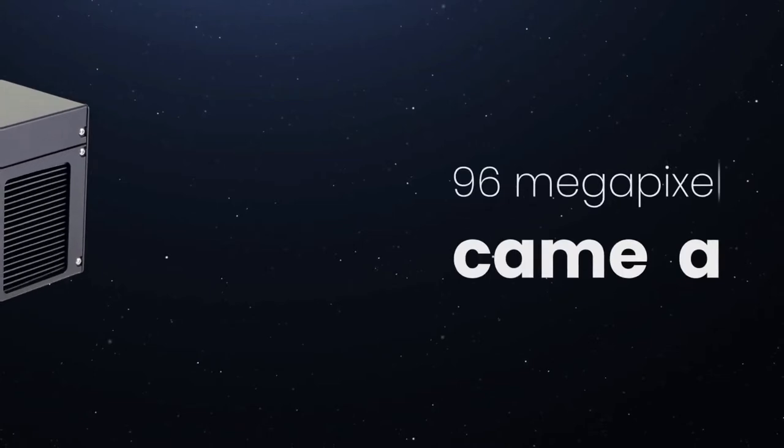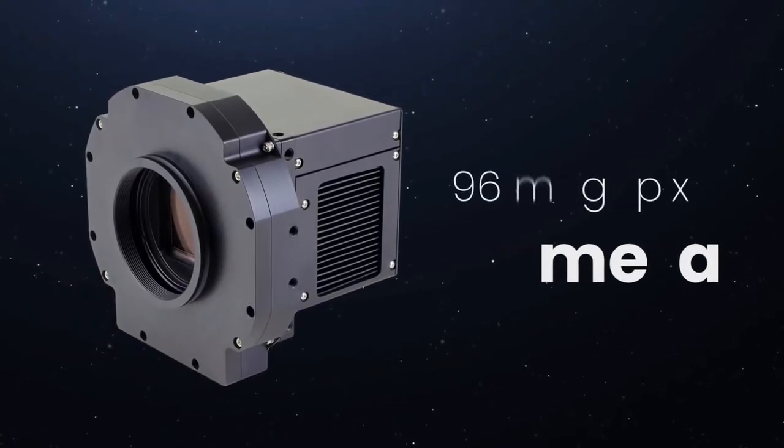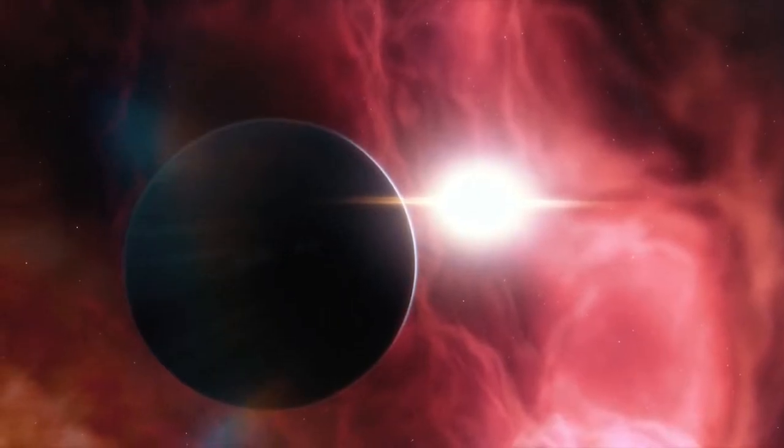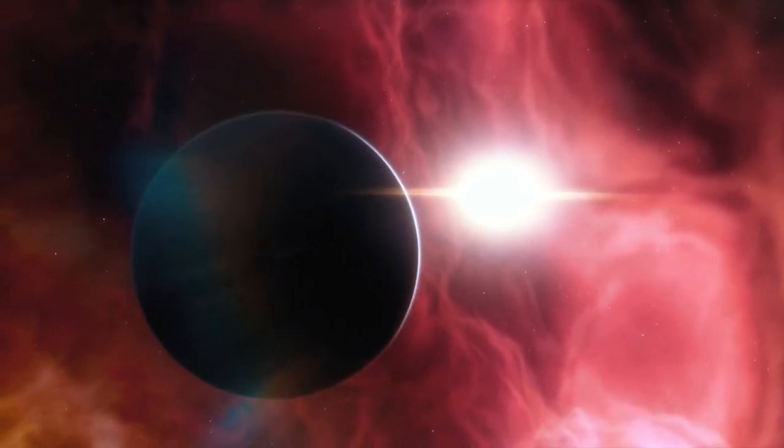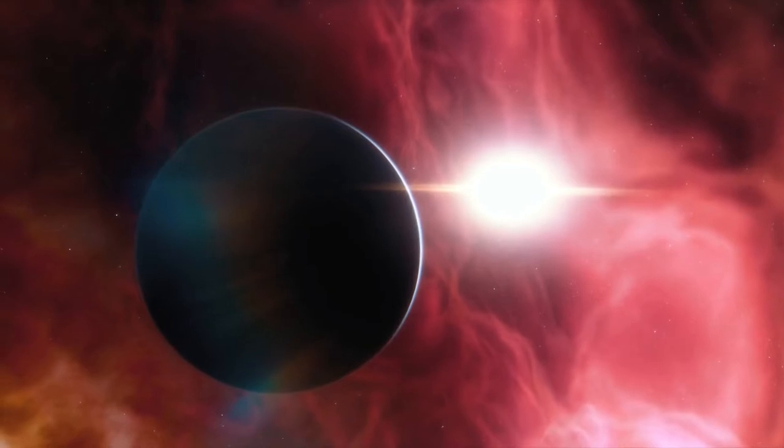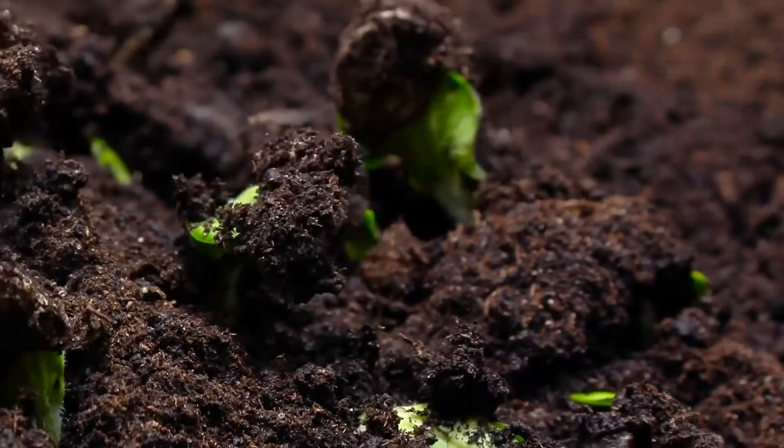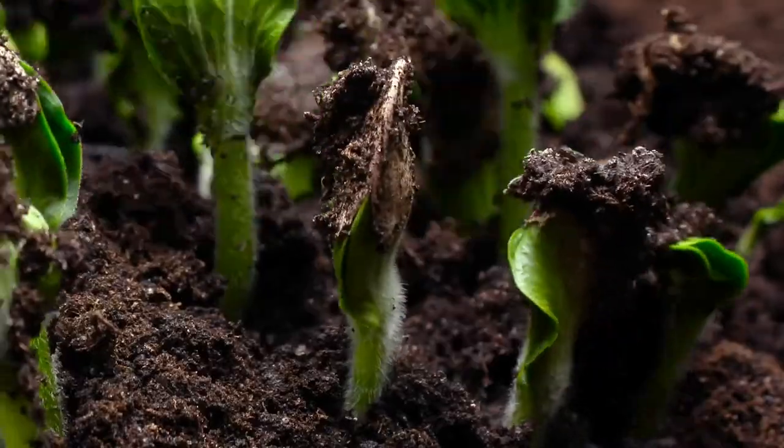And it also had a 96 megapixel camera to process the light. Astronomers were interested in finding out just how many stars have planets orbiting around them, and how many of these exoplanets have conditions suitable for life to develop.